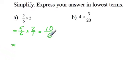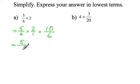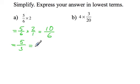Now we have 10 over 6, and both 10 and 6 divide by 2. If I divide 10 by 2 that's 5, and 6 by 2 equals 3. Now I have an improper fraction and I could change it into a mixed number. 3 fits into 5 once fully and then we have 2 left over, so the final answer is 1 and 2 thirds.